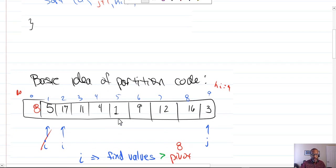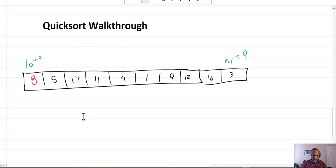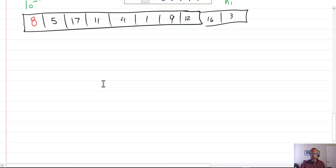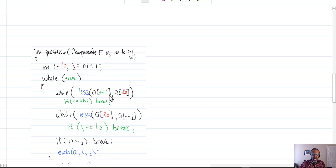We're trying to see how we get from an array that looks like this to an array where the values on the left are smaller than and the values on the right are larger than the pivot value we've placed. The way the algorithm works, in the partition code, there is an integer value I that's set to low, where low is the low part of the current array segment we're looking at.